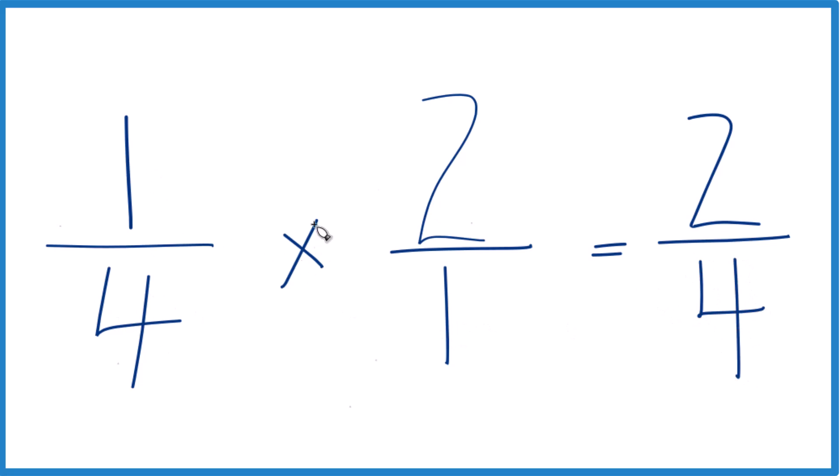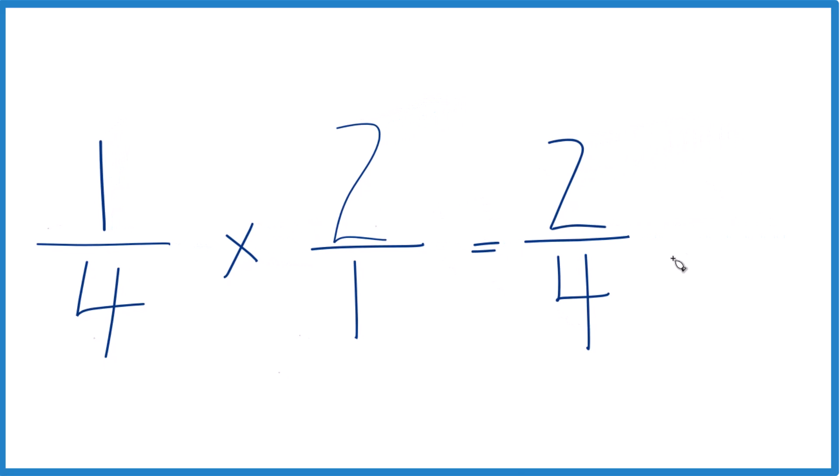So one-fourth of two, or one-fourth times two, that gives us two-fourths. But we can simplify this because two goes into itself one time, two goes into four two times. So we just cut these in half, we end up with one-half. So one-fourth times two gives us the fraction one-half.